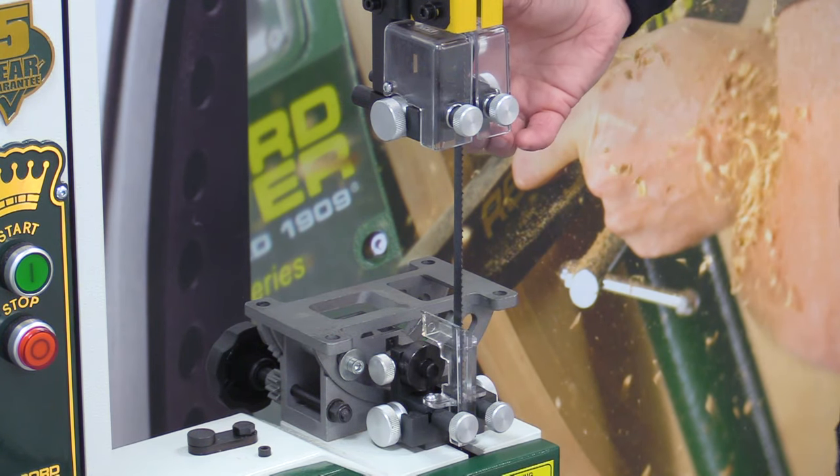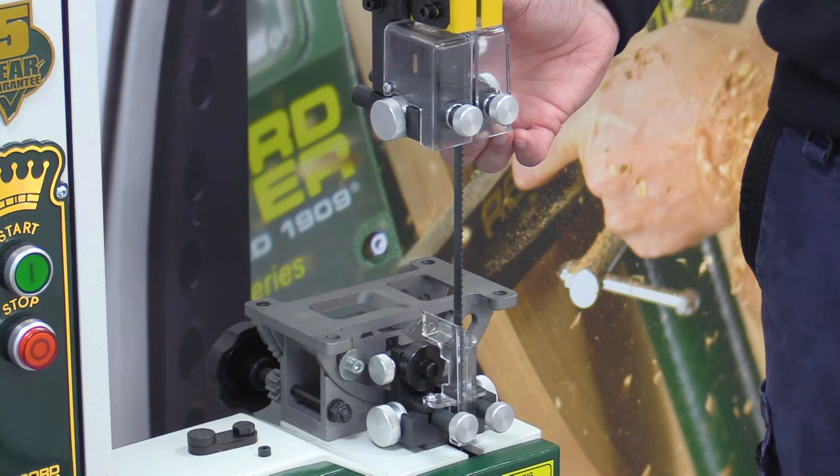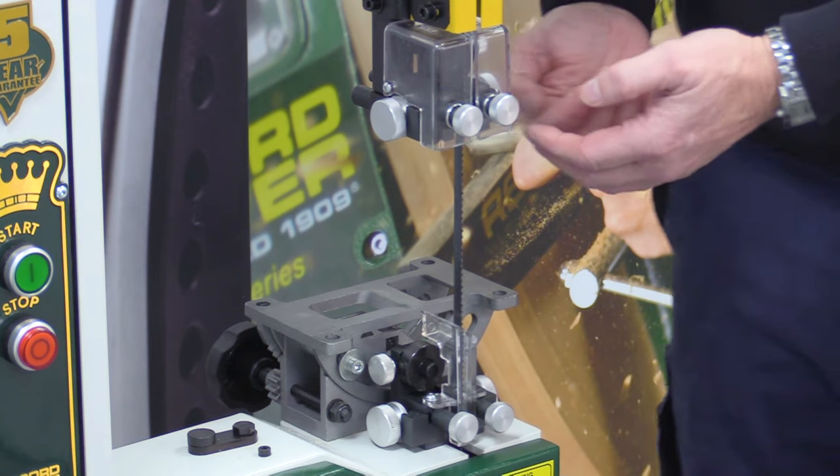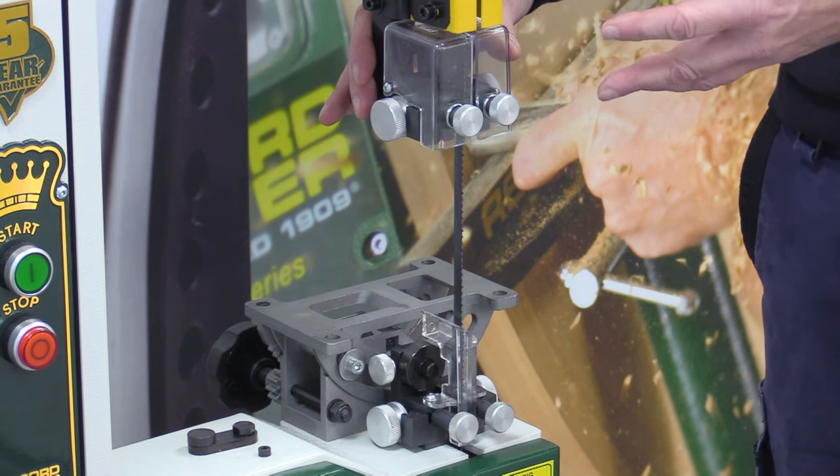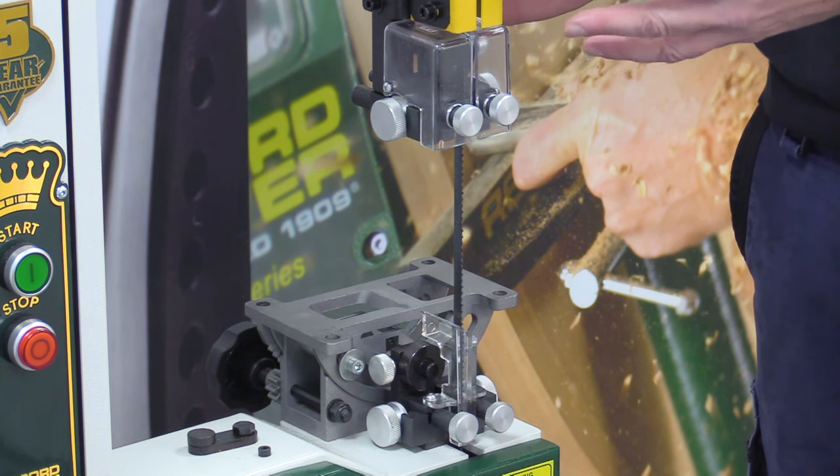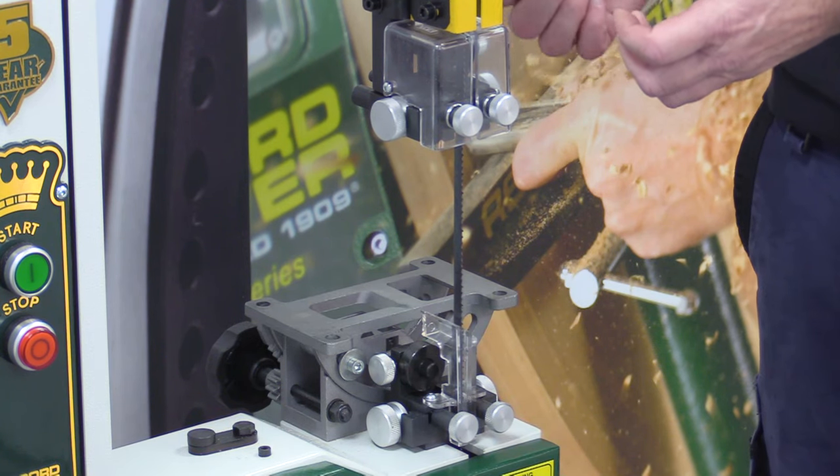Now the guides themselves are made from premium grade O1 tool steel. Now they're on sliding blocks and obviously the closer you get into the blade without touching it, what this does, it gives the blade support but at the same time it's going to take heat away from the blade.